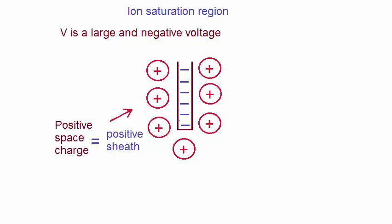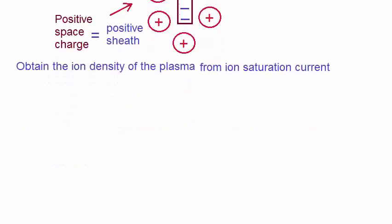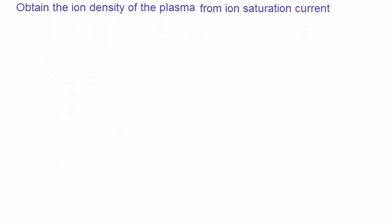Now, let's obtain the ion density of the plasma from the ion saturation current. The expression for current density is given by this, J equals I on A, where J is the ion current density, I is the ion current, and A is the surface area of the probe.